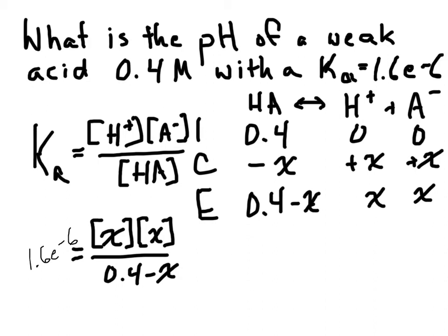And just a reminder that since our Ka value is to the negative 6th, we can do the little drop, the change of X, because it's not really going to make a difference on the concentration of the acid itself. So we can drop that. The rule that we go by is if it's e to the negative 5th or smaller, we can drop the change in X. So we end up with an equation that looks like this: X squared over 0.4 is equal to 1.6e to the negative 6th.